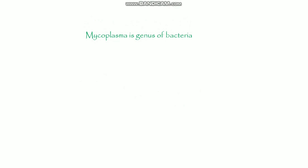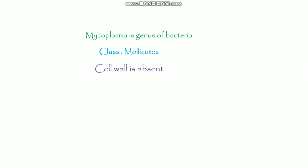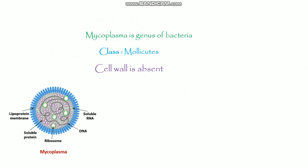First we need to know: what is mycoplasma? Mycoplasma is the genus of bacteria, and its class is Mollicutes. The cell wall is absent, which is the big difference between mycoplasma and bacteria. This is the structure of mycoplasma — it contains a lipoprotein membrane, soluble protein, ribosome, DNA, and soluble RNA.